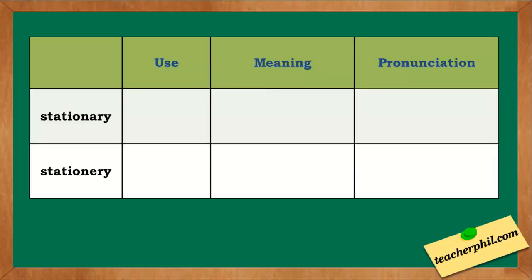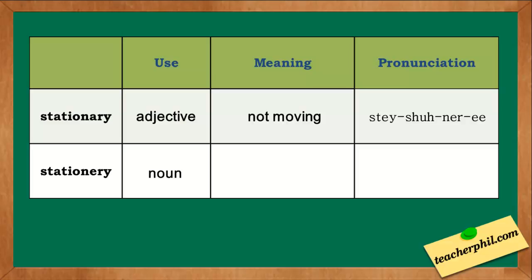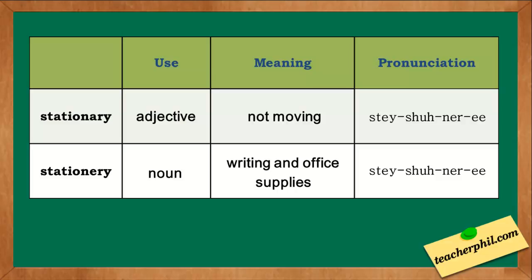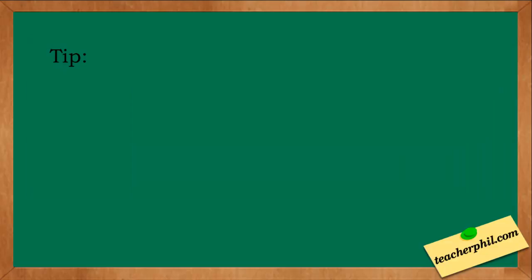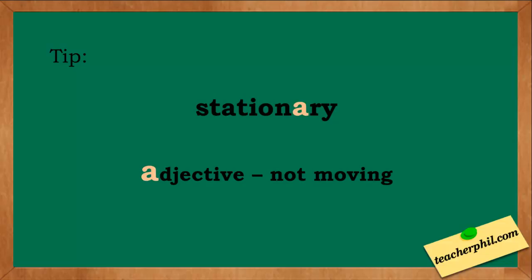Here's the table for the two words. Stationary with an A is an adjective meaning not moving, pronounced stationary. Stationery with an E is a noun meaning writing and office supplies, with the same pronunciation: stationery. As a tip, just remember that stationary with an A is an adjective which means not moving.